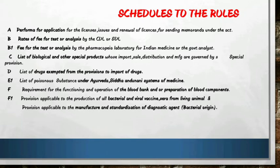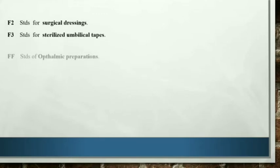Schedule F1 to the rules covers provisions applicable to the production of all bacterial and viral vaccines, all sera from living animals, and the manufacture and standardization of diagnostic agents of bacterial origin.